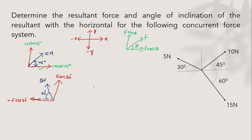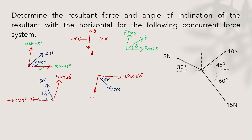For the third force of 15 Newtons with an inclination of 60 degrees, this force lies in the fourth quadrant, where x is positive and y is negative. The x component is 15 cos 60° (positive, pointing right) and the y component is minus 15 sin 60° (negative, pointing downward). For any concurrent system, first resolve each force separately with the correct sign convention into x and y components.